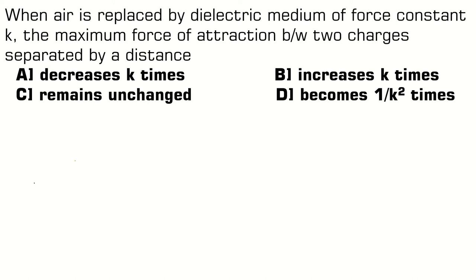When air is replaced by dielectric medium of force constant k, the maximum force of attraction between two charges separated by a distance: A) decreases k times, B) increases k times, C) remains unchanged, or D) becomes 1 by k² times. So let us find out.